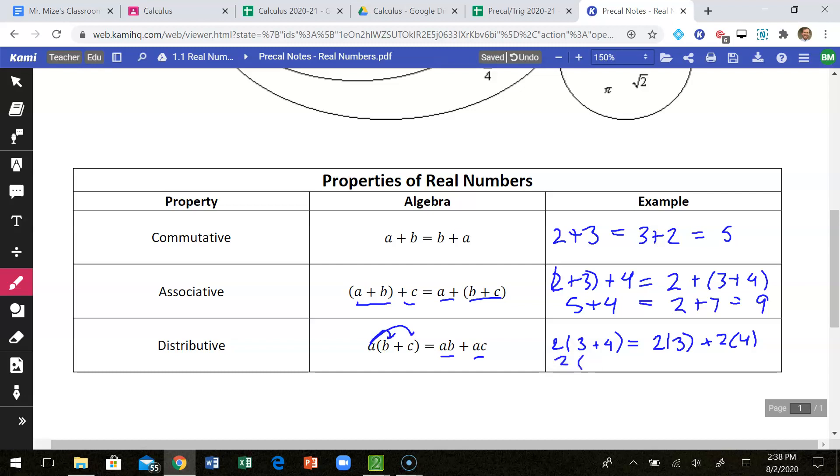So over here, technically I could say 2 times 7, which is going to give me 14. Whereas over here I would have 6 plus 8, which again would give me 14. So these are all three properties that you should have seen a long time ago: the commutative property, the associative property, and the distributive property. But those are all the properties of real numbers.